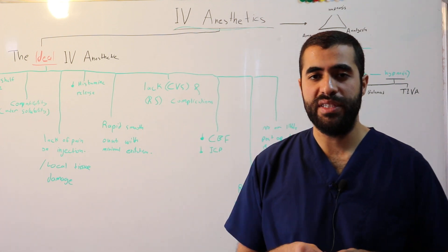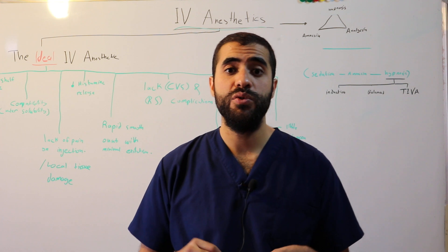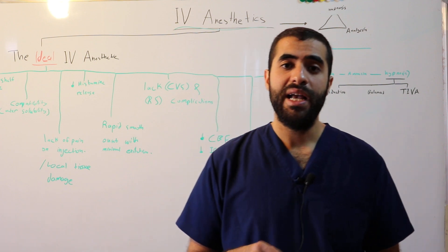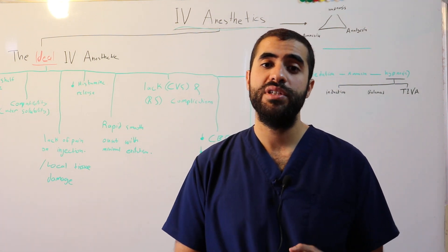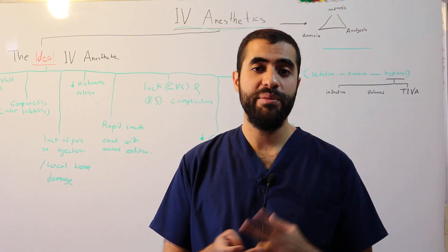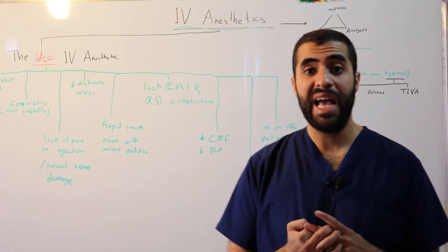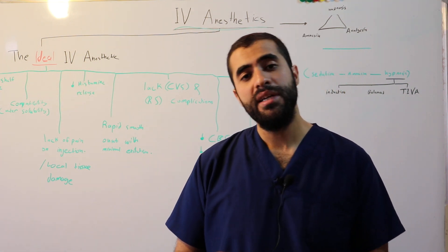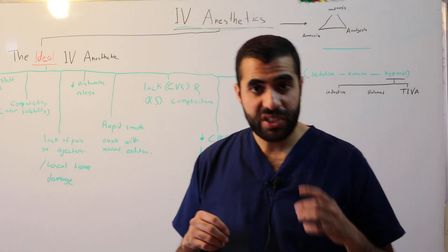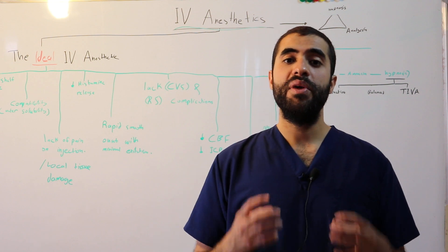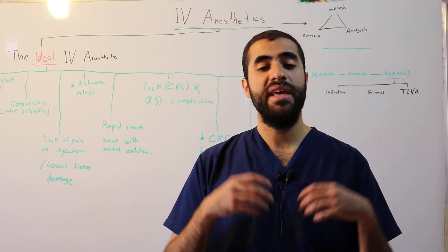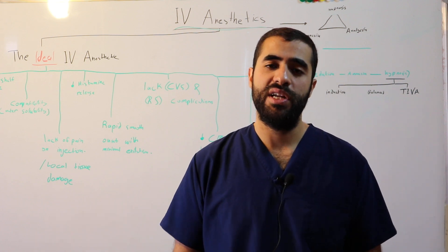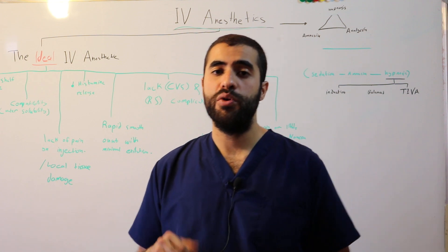The second element of the triad of anesthesia is amnesia — you have to make your patient lose his memory during the surgery. The third important element is analgesia, because surgery is painful, and you have to give your patient analgesia to avoid sympathetic reflexes such as tachycardia and high blood pressure, and the unpleasant feeling of pain during surgery.